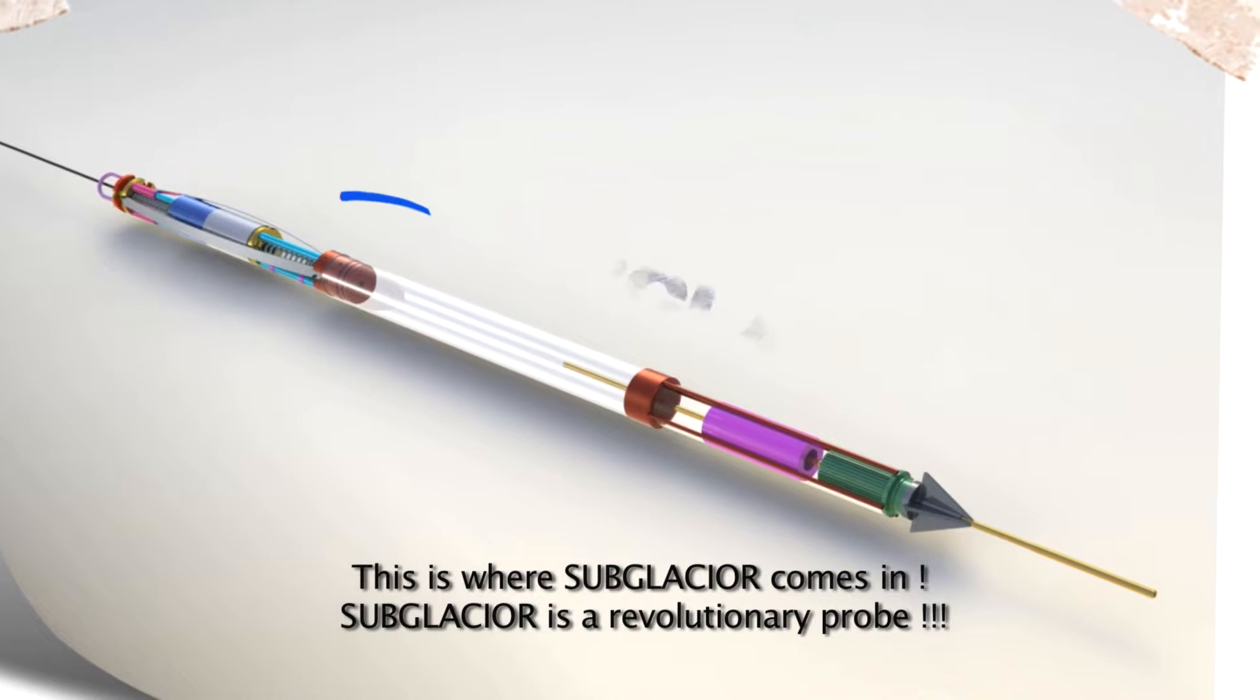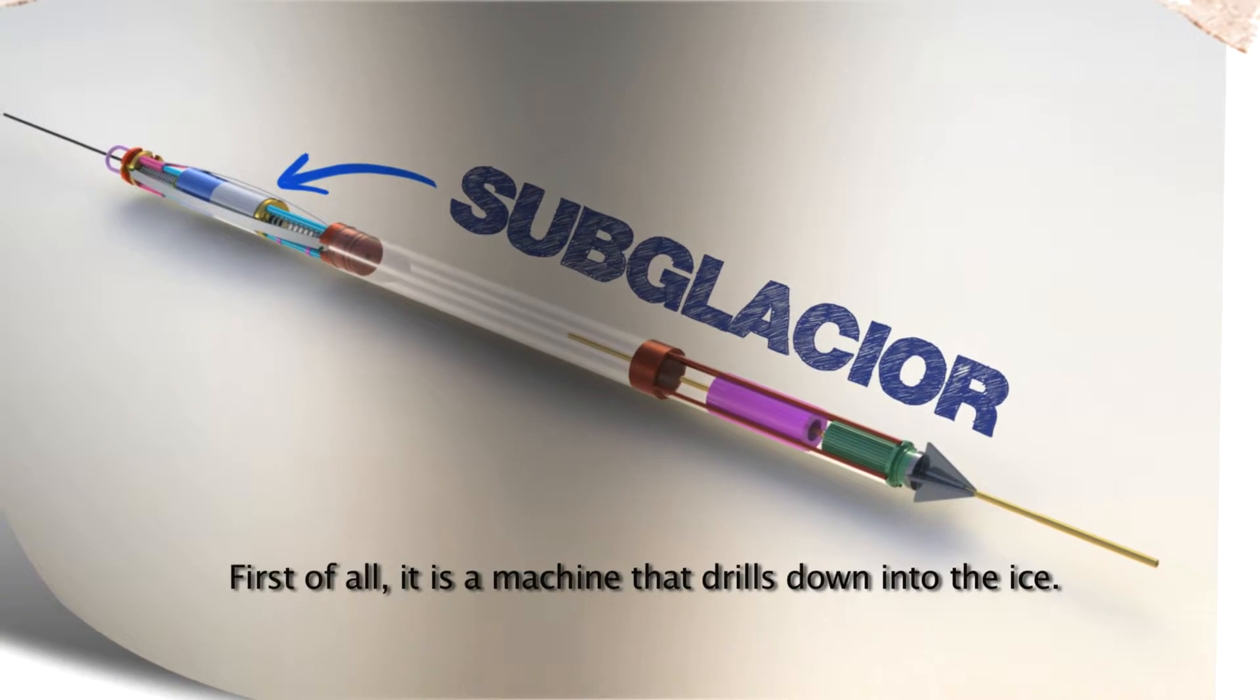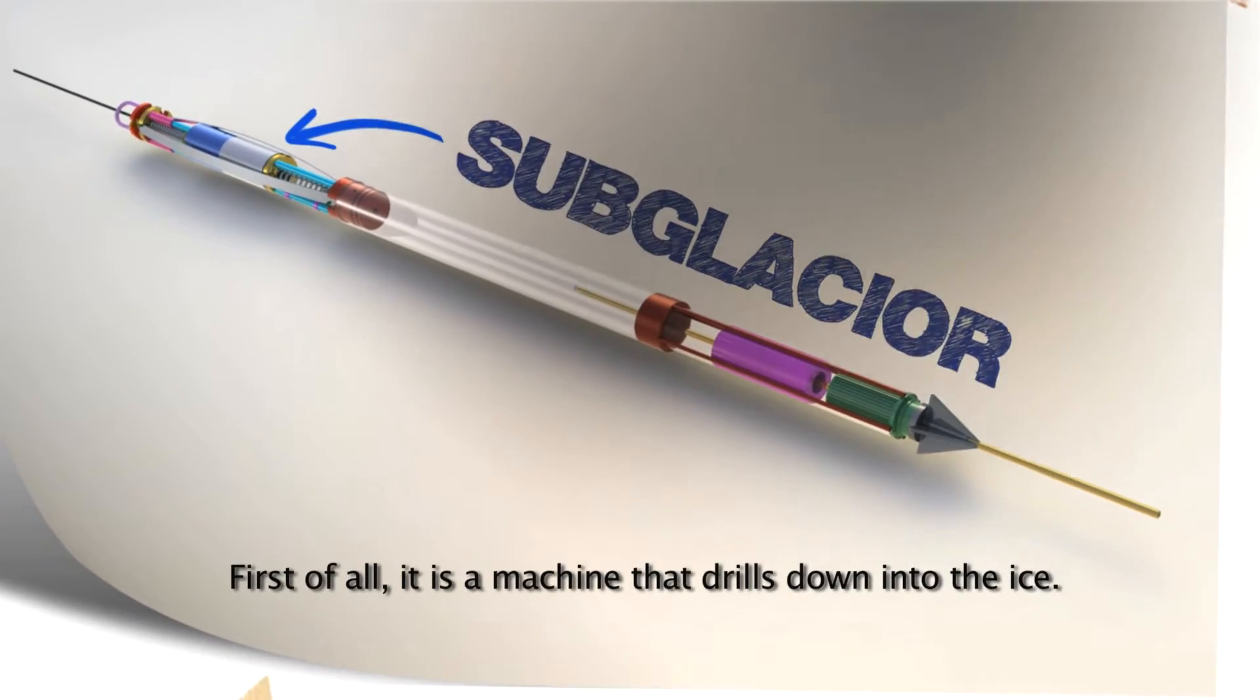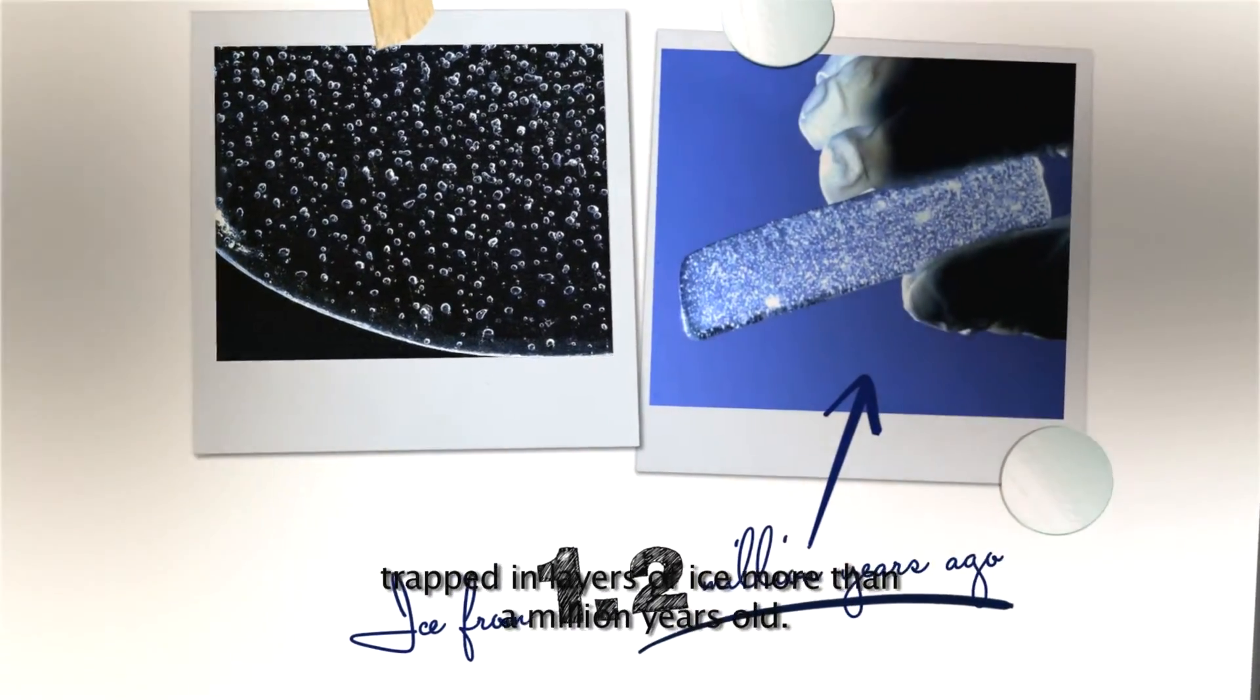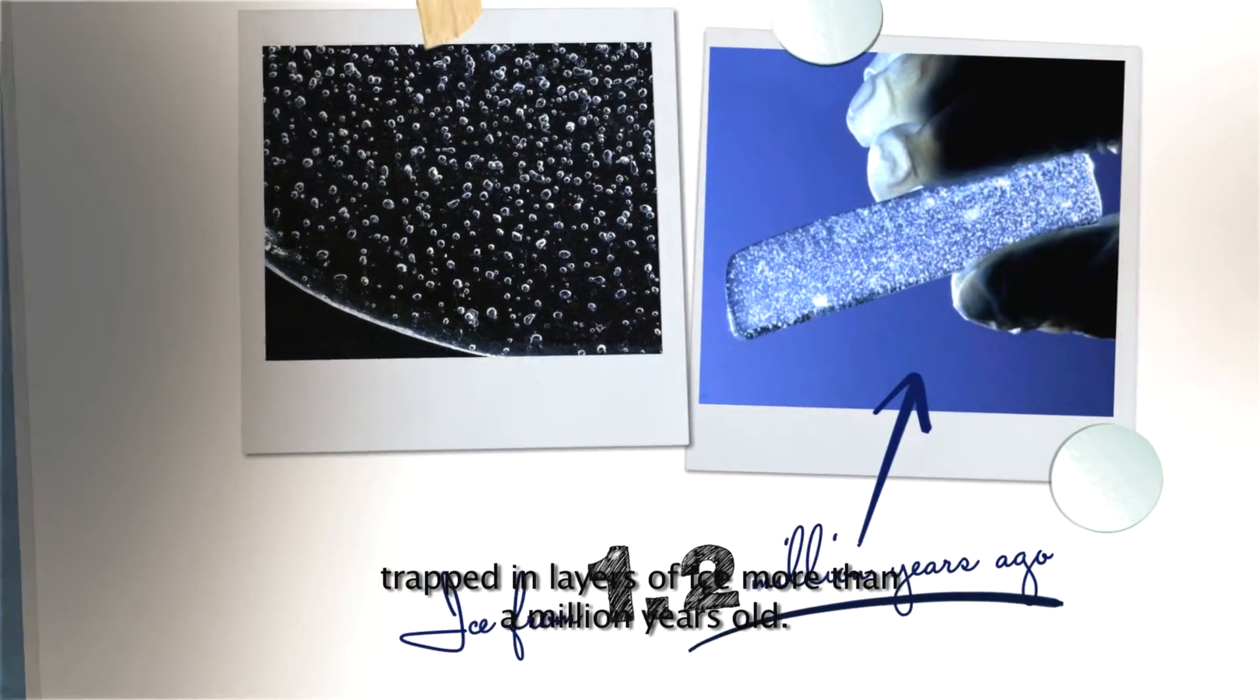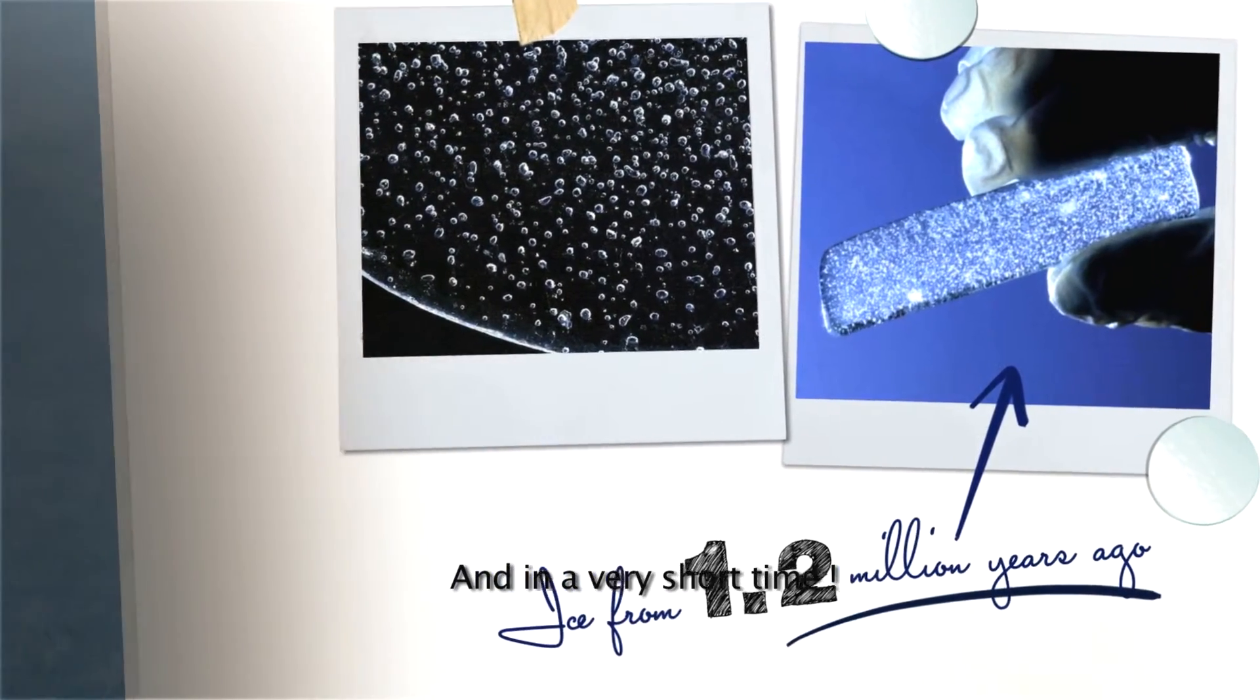This is where Subglacier comes in. Subglacier is a revolutionary probe. First of all, it is a machine that drills down into the ice. Quicker than the traditional core sampling technology, it samples the air trapped in layers of ice more than a million years old, and in a very short time.